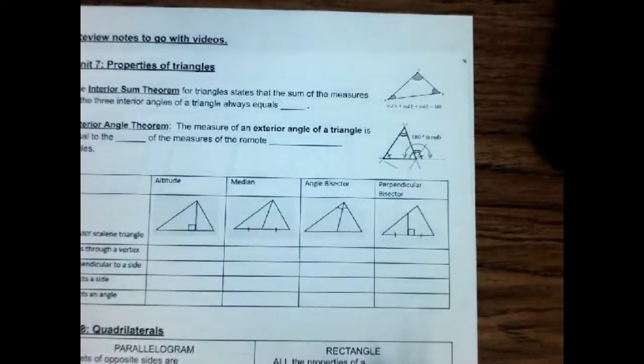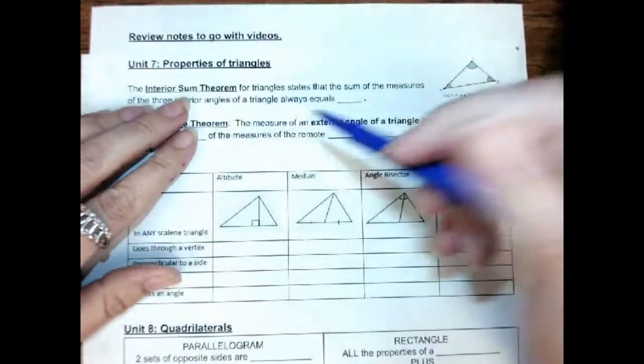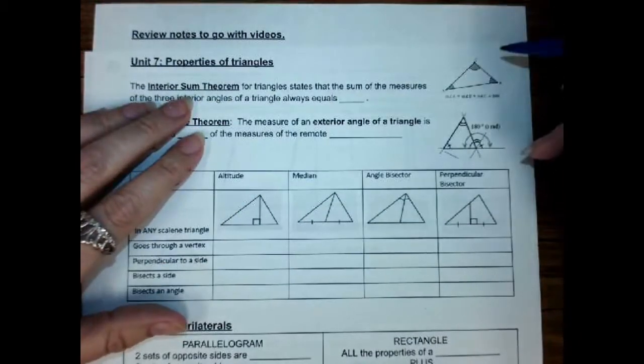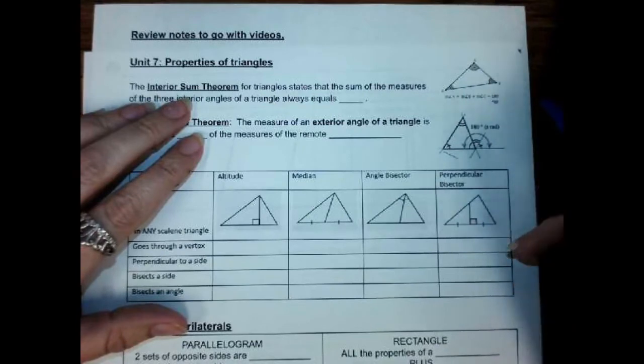So, in unit 7, unit 7 was properties of triangles, and we did the interior sum theorem that said if I add up all three of the angles inside a triangle, they add up to 180.